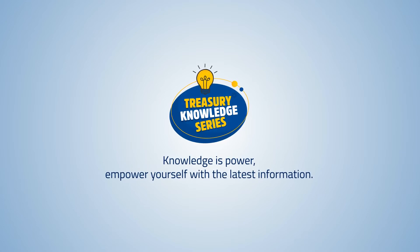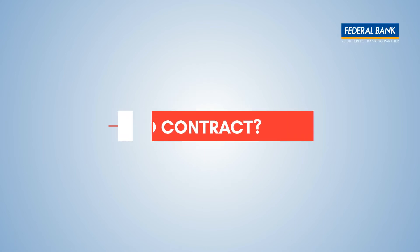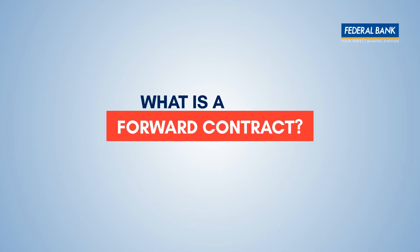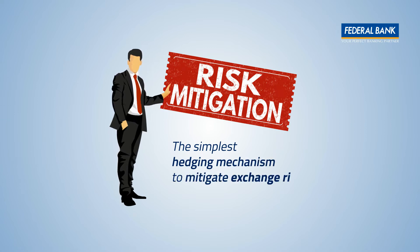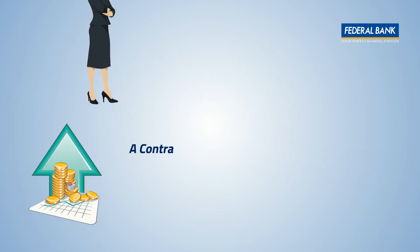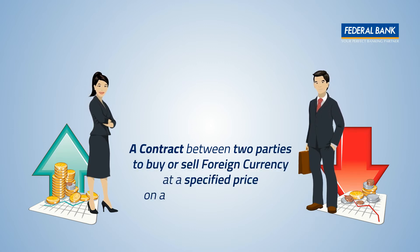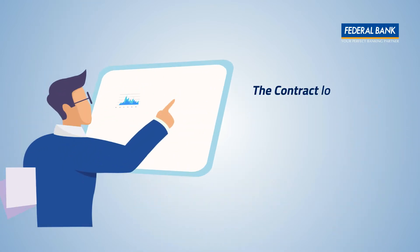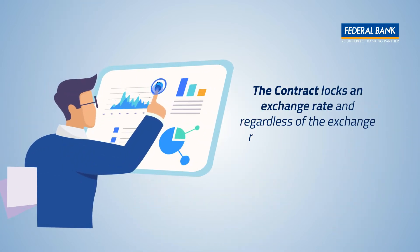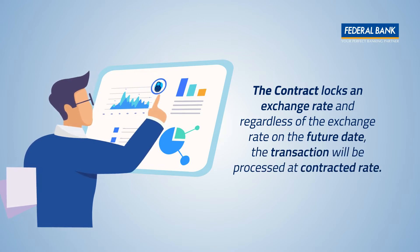Federal Bank presents the Treasury Knowledge Series. What is a forward contract? It is the simplest hedging mechanism to mitigate exchange risk — a contract between two parties to buy or sell foreign currency at a specified price on a future date or period. The contract locks in an exchange rate, and regardless of the exchange rate on the future date, the transaction will be processed at the contracted rate.